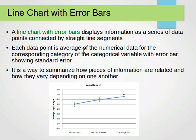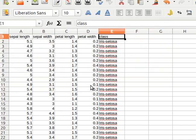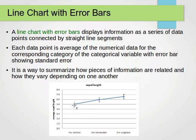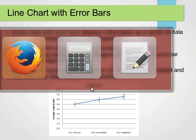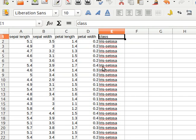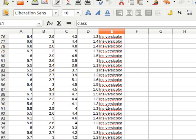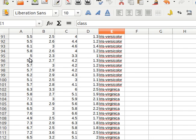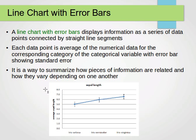Each data point is the average of the numerical data for the corresponding category of the categorical variable, with the error bar showing standard error. So if you remember the iris dataset, we have sepal length, sepal width, petal length, petal width, and then the class — three classes: iris setosa, iris versicolor, and iris virginica. What this chart does is compute the average sepal length for each of the three classes, and then connect those average values using straight line segments.